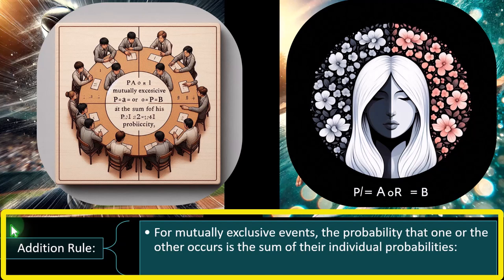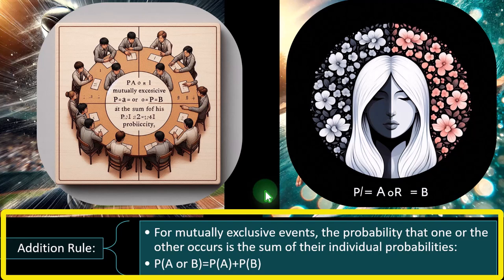Addition rule: for mutually exclusive events, the probability that one or the other occurs is the sum of their individual probabilities — P(A or B) = P(A) + P(B). So if I look at the probability of the batter hitting the ball and the probability of the surfer catching the wave, and I'm looking at the probability of either one happening — not both having to happen — I can add those probabilities up. However, when looking at an 'or' statement, it's important to consider whether it's inclusive or exclusive; typically we mean inclusive, meaning either or both can happen.